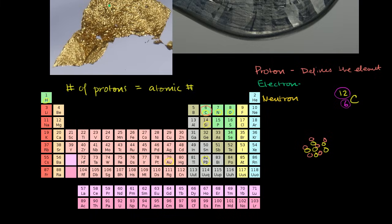And if carbon-12 is neutral, it will also have six electrons. One way of thinking about the relationship between electrons and the nucleus is that you can imagine the electrons are kind of moving around — buzzing around this nucleus. One model is to think of them as orbiting around the nucleus, but that's not quite right. They don't orbit the way a planet orbits around the sun, but it's a good starting point.